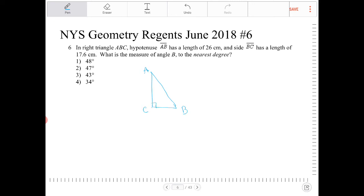C is going to be the right angle. The hypotenuse is 26 centimeters, and side BC has a length of 17.6.